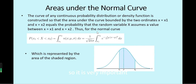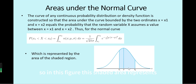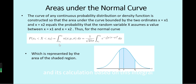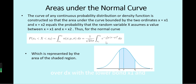It is very important to calculate the probability or areas under the normal curve. In this figure, the shaded area represents the probability of this normal random variable between x1 and x2. Its calculation is based on the integral of the density function over dx with lower bound x1 and upper bound x2.